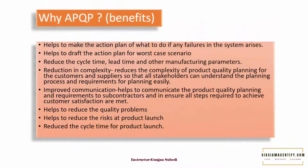Why should we go with APQP planning? If we plan for quality, we can make an action plan. For example, we can pre-plan if any failure in the system arises. This helps us to draft the action plan for the worst-case scenario also. Quality planning also helps us to reduce the cycle time, lead time, and other manufacturing parameters. It comes with additional benefits such as reduction in complexity. APQP is a structured approach — it reduces the complexity of product quality planning for customers and suppliers, so that all stakeholders can understand the planning process and requirements easily.